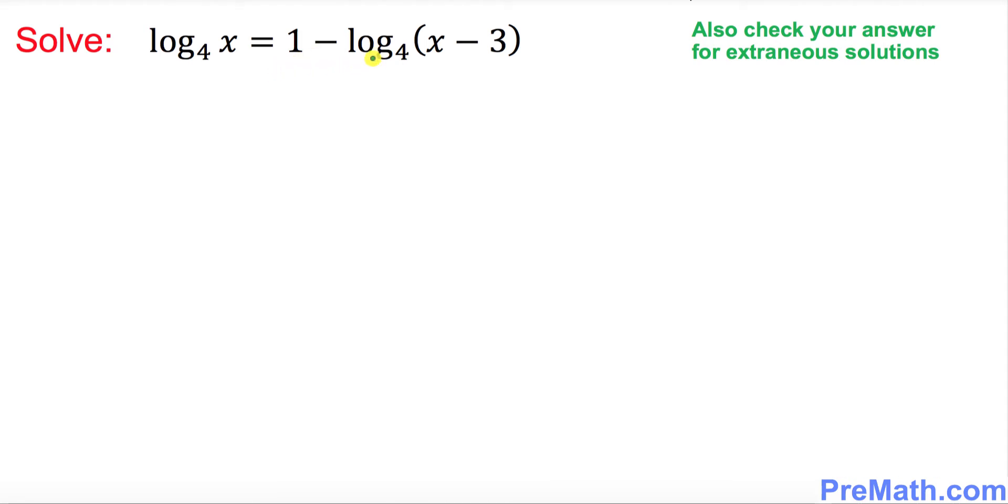By moving this part, the one that I circled, to the left hand side. So what happens once we move that one is it's going to look like this: log of x with the base 4. Once you move this negative part, this becomes positive log of x minus 3 with the base 4.